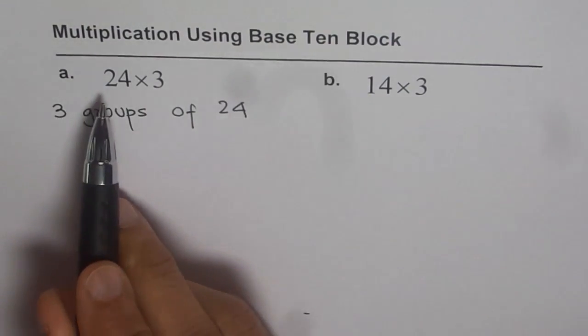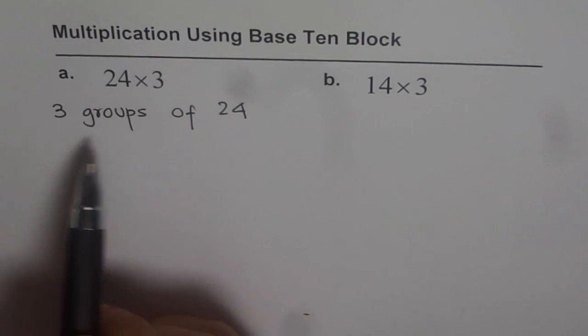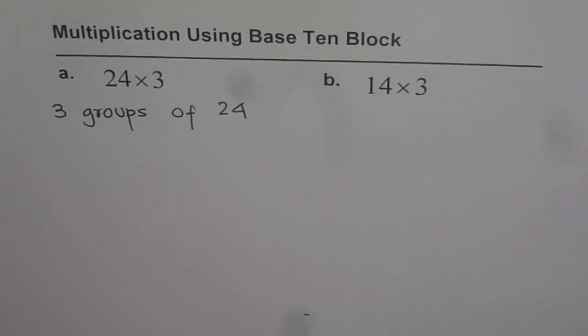It also means 24 groups of 3, right? But since it is easy to make 3 groups of 24, we will do like that. And 24 can be written with base 10 blocks, correct?